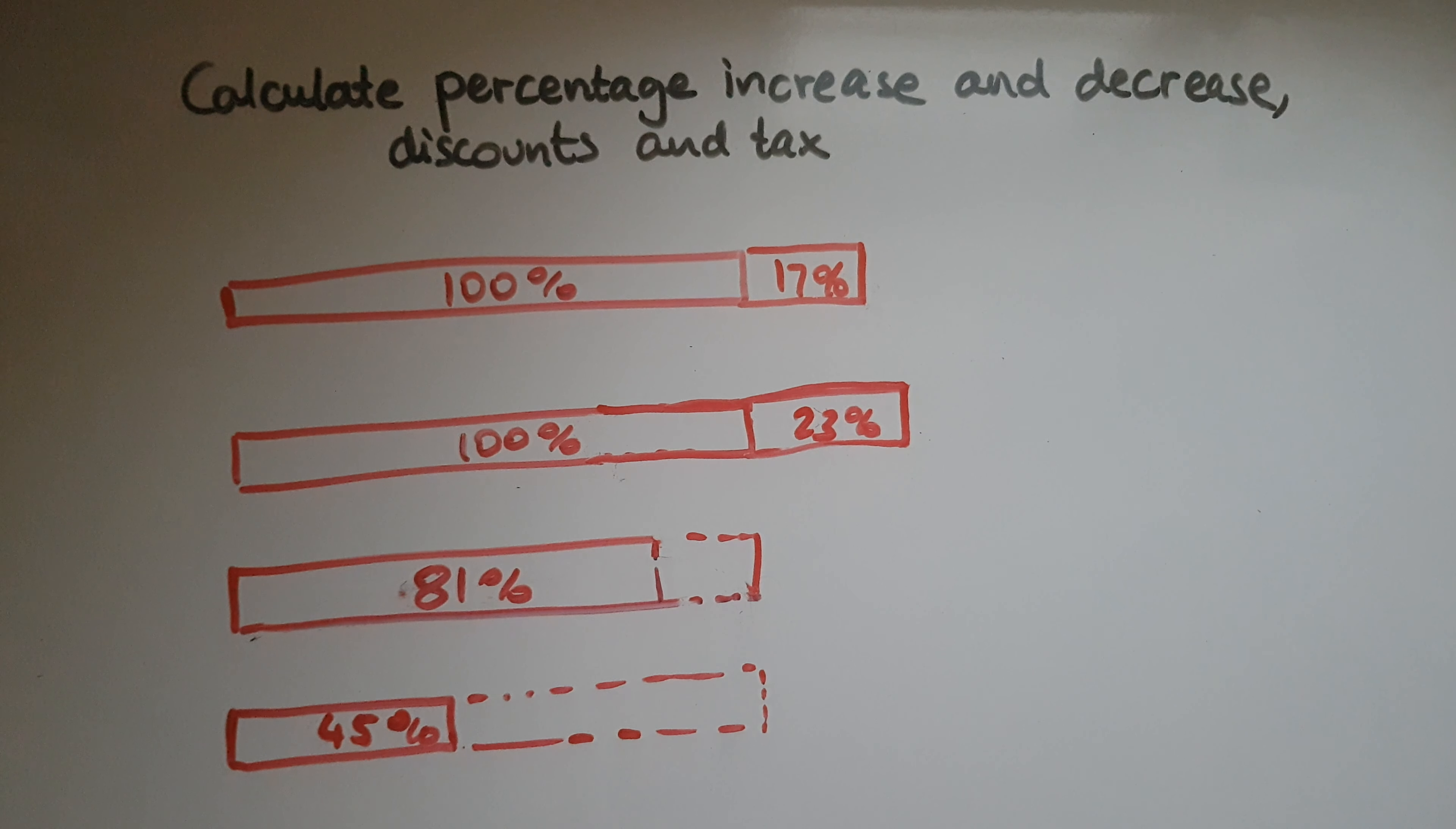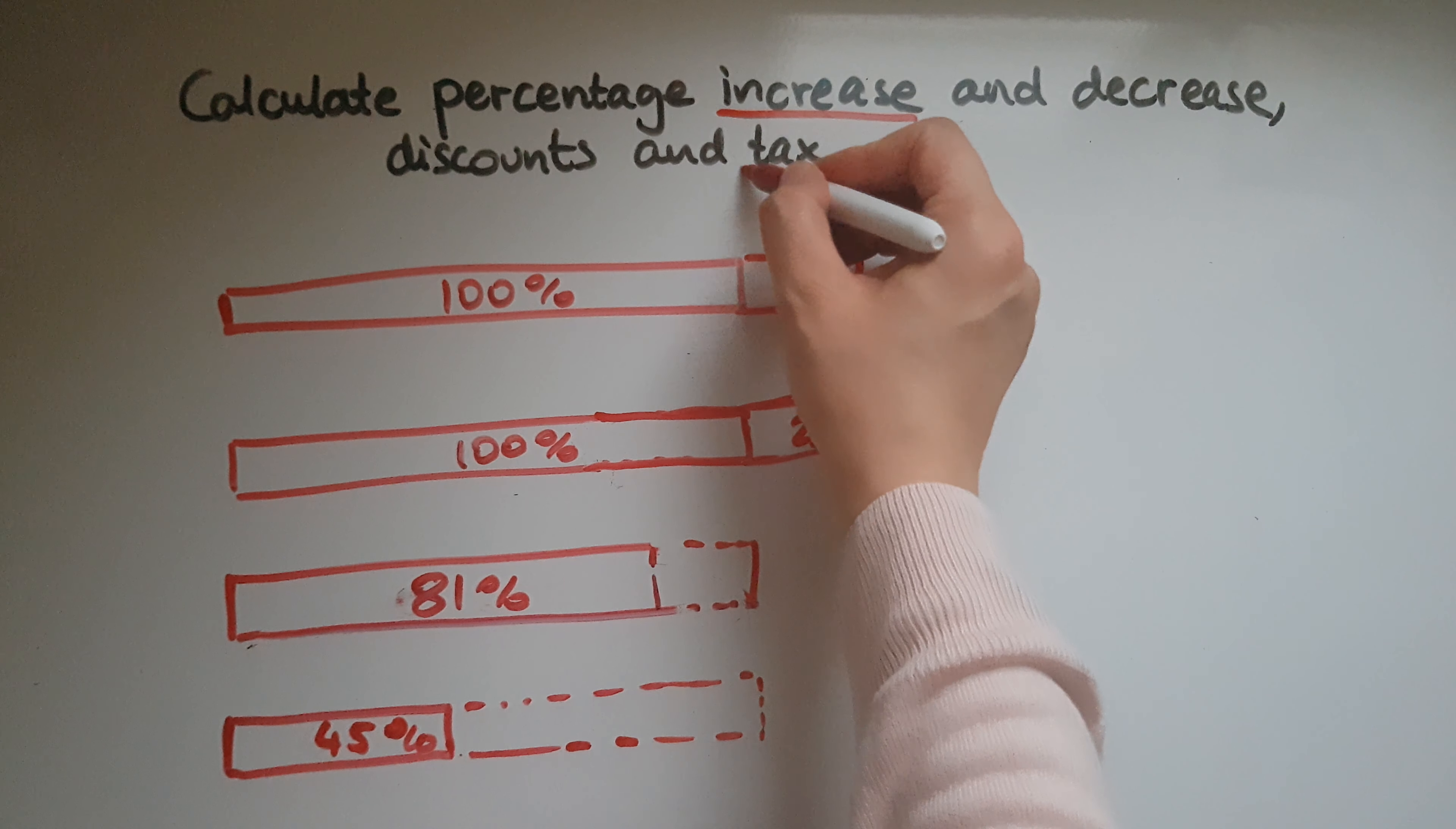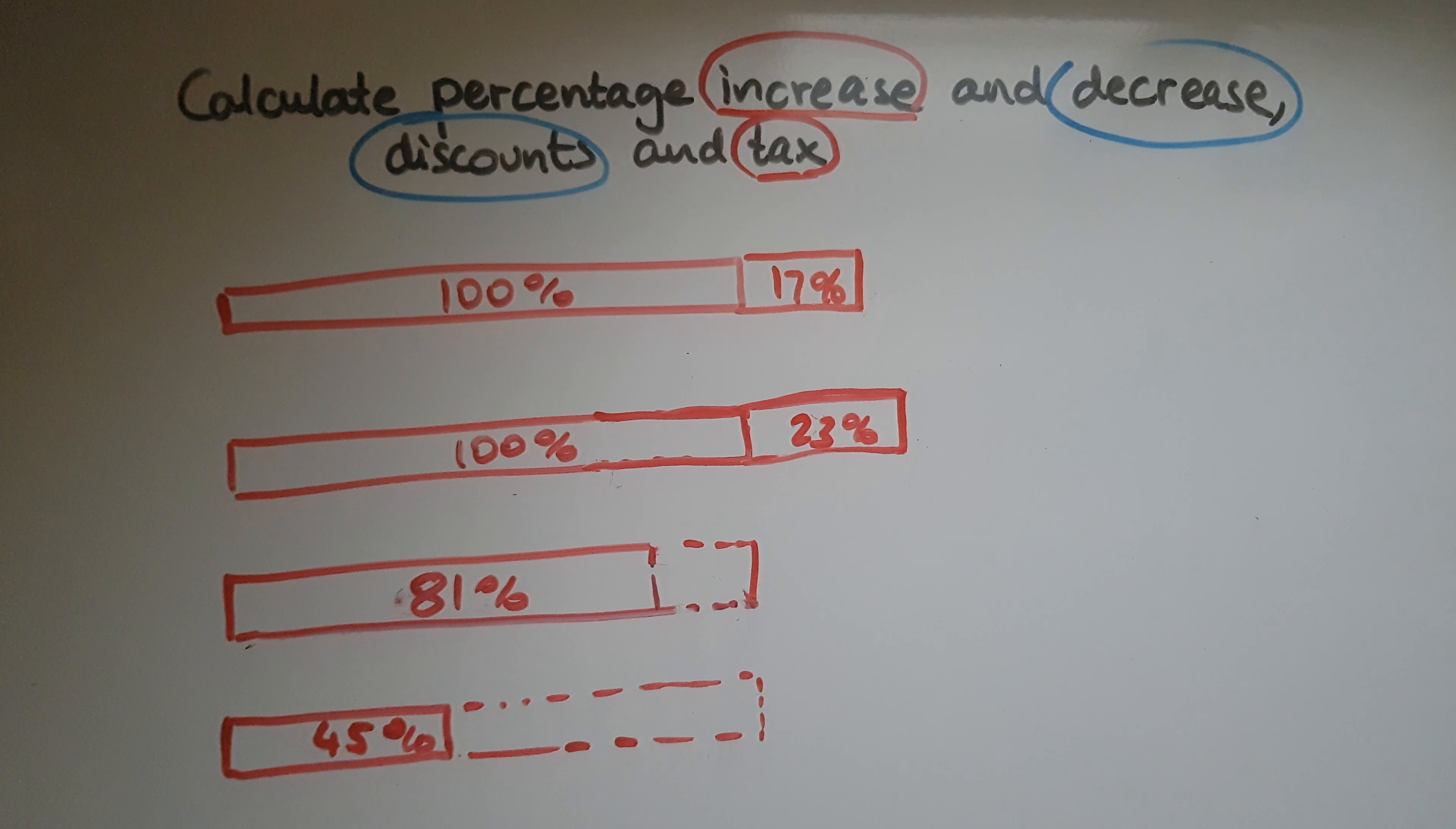In this video we'll learn to calculate percentage increase and decrease, discounts and tax. Percentage increase and tax work pretty much in the same way because you add on amounts. You increase the amount that you've got to pay when it comes to tax, which is the same as a percentage increase. And percentage decrease and discounts work pretty much in the same way as well.